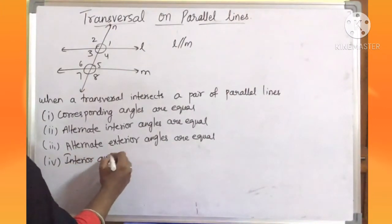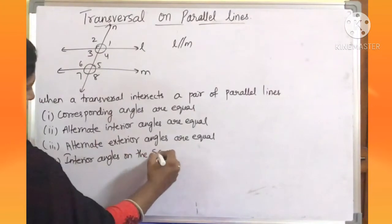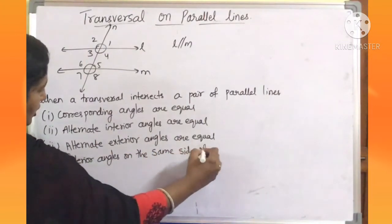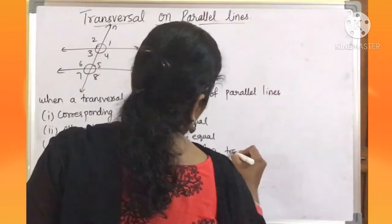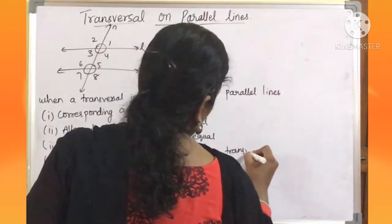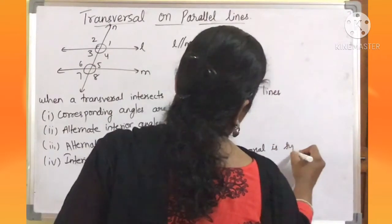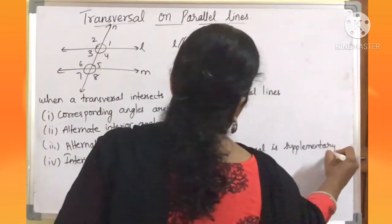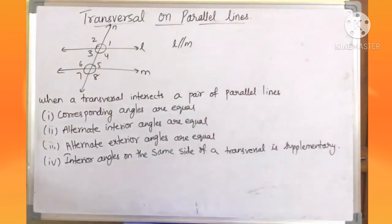Interior angles on the same side of a transversal are supplementary. What is meant by supplementary? The sum of the two angles is 180 degrees.